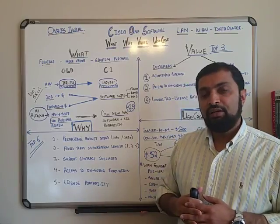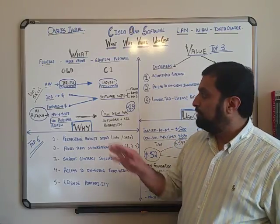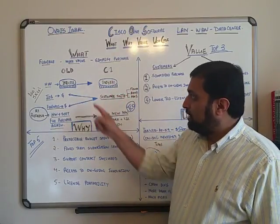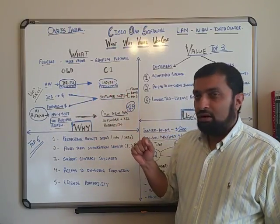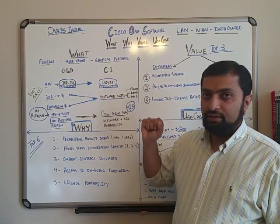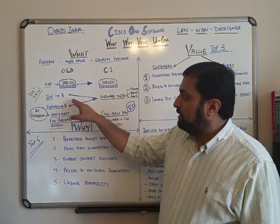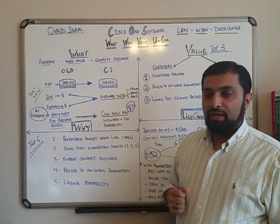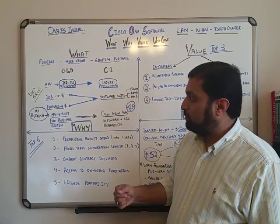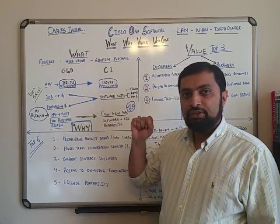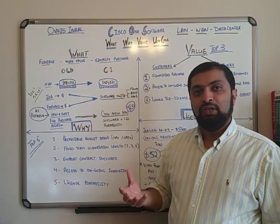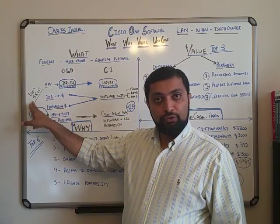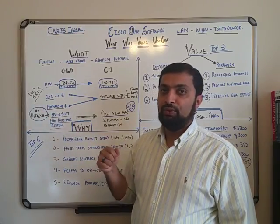Now let's do a side-by-side comparison of traditional way of selling hardware and software compared to C1. In the case of the traditional way, you would select the hardware — for example, a 4331 ISR — and then you have to make a decision on which IOS or the available bundles that you would buy: security, unified communications, and so on. And then you need to worry about the additional features and functionalities based on their business requirements. So there are hundreds of individually priced item SKUs that you need to select from the list.